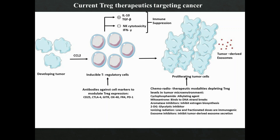Several strategies such as antibodies targeting important T-reg cell surface receptor molecules like CD25, CTLA-4, GITR, and OX40, or small molecule inhibitors and ionizing radiation, reduce the T-reg cell number and thus represent currently available modalities for T-reg depletion. Recent studies from our laboratory have demonstrated that the glycolytic inhibitor 2-DG, which inhibits metabolic activity in tumors, reduces the T-reg frequency.